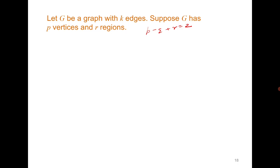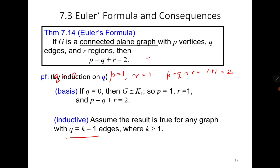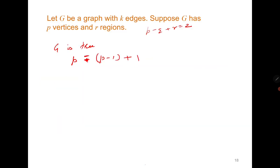This leads us to break the proof into two cases. Case 1: G is a tree. If G is a tree with p vertices, it has p minus 1 edges and only one region. So p minus (p minus 1) plus 1 equals 2. The result holds. Case 2: G is not a tree. Then there must exist a cycle C. Let e be an edge belonging to cycle C in graph G, and consider G minus e.